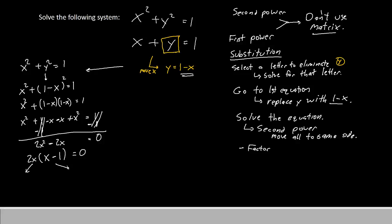And we'll solve both pieces. We'll have 2x equals 0 as our first piece, and x minus 1 equals 0 for our second piece, leaving us with x equals 0, and x equals 1. These are our 2x values.